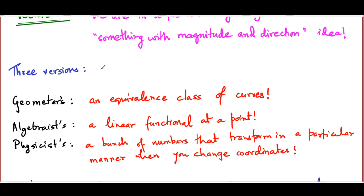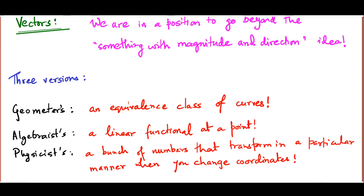Finally, we have the physics version of what a vector is: a physical object described by a bunch of numbers that transform in a particular manner when you change coordinates. If you think about it, this also is somewhat unsatisfactory because it seems to say that a vector is something which behaves like a vector. We will see later on that the algebraic definition of a vector automatically gives you this transformation law between coordinates - you don't really have to postulate that as part of the definition.